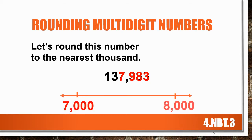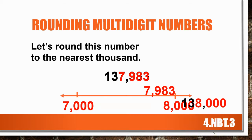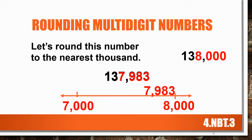You said 7,000 and 8,000 — that's awesome! I'm going to place 7,983 on this number line where it belongs. So is it closer to 7,000 or 8,000? You're right, 8,000. So this number rounded to the nearest thousand is 138,000.